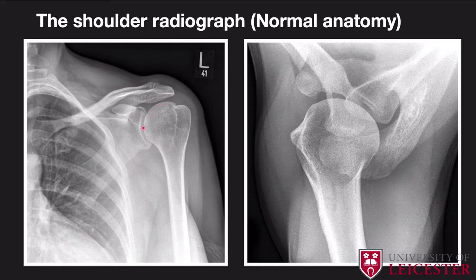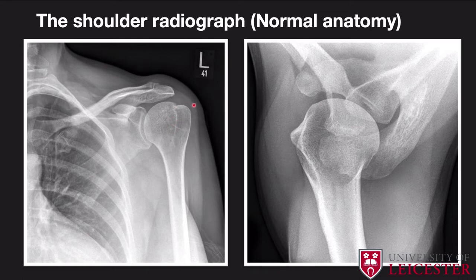Moving on to the humeral head: there are both surgical and anatomical necks. The surgical neck is typically where you tend to get fractures. Your humeral head articulates with the glenoid, and you have two bony projections — the greater tuberosity on the outside and the lesser tuberosity just medial to that. Within these is the bicipital groove, where the long head of the biceps tendon runs, crosses over, and attaches to the superior labrum. That's predominantly your AP — anterior-posterior radiograph.